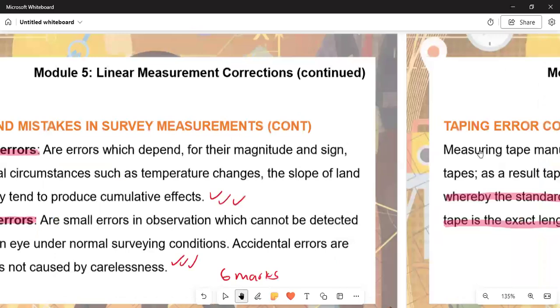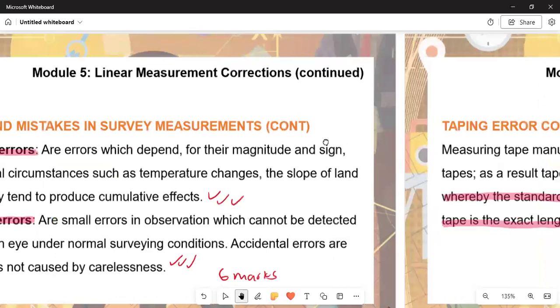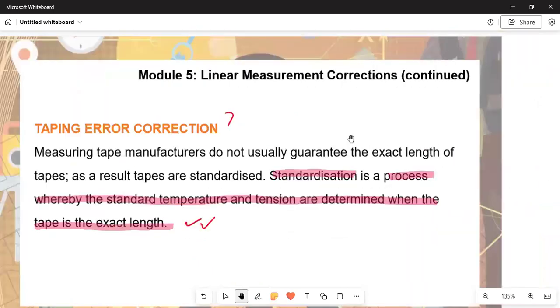Now we talk about taping error correction. Measuring tape manufacturers do not usually guarantee the exact length of tapes. As a result, tapes are standardized. What is meant by standardization? This is the process whereby the standard temperature and tension are determined when the tape is in the exact length. That is for two marks.